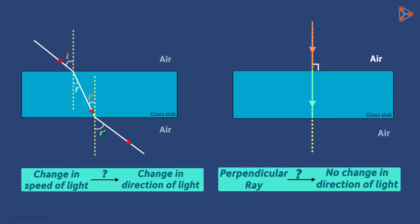Now see the diagram: when a light ray is incident going from air through a glass slab, it bends towards the normal. However, if the ray travels directly along the normal, no refraction occurs.